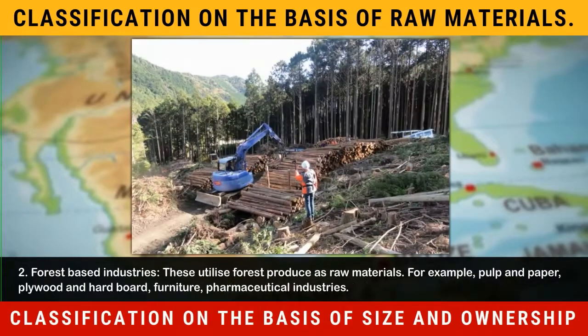2. Forest-based industries. These utilize forest produce as raw materials. For example, pulp and paper, plywood and hardboard, furniture, pharmaceutical industries.